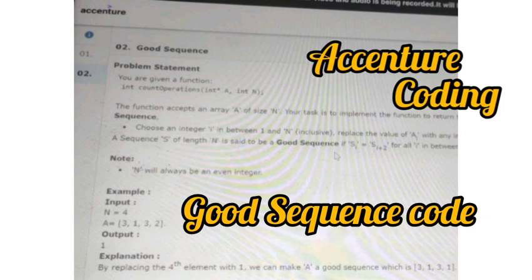The code name is Good Sequence. Let's discuss the code. The problem statement was: You are given a function integer count operation in bracket, integer pointer a, integer n.